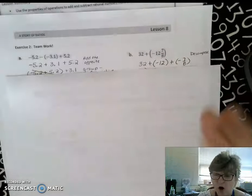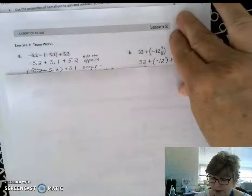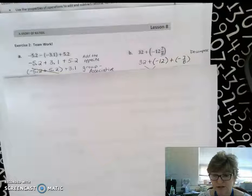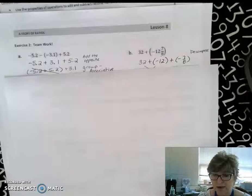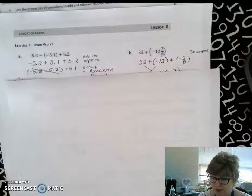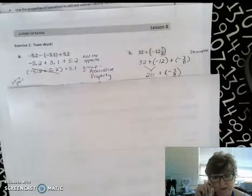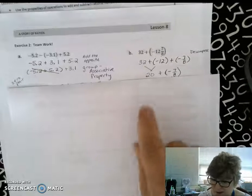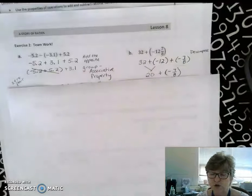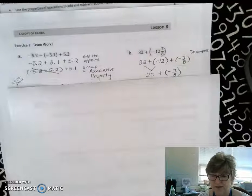Now this is already in order, but I can definitely do the grouping. You can use the associative property and group 32 plus a negative 12, or you can just follow that order of operations from left to right. And you get a positive 20 plus a negative 7/8ths.